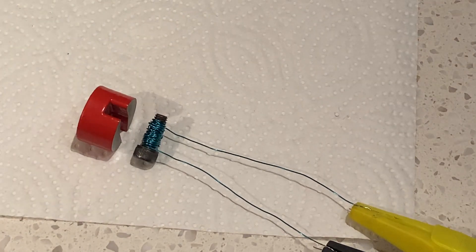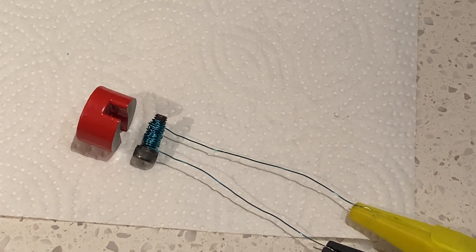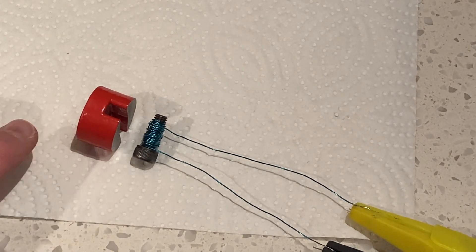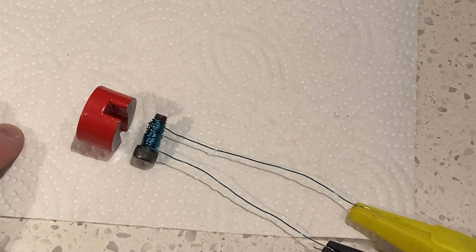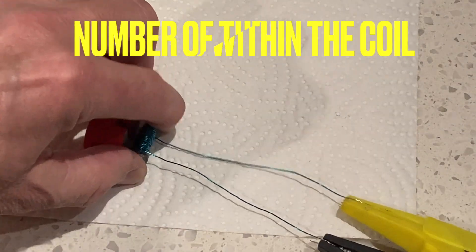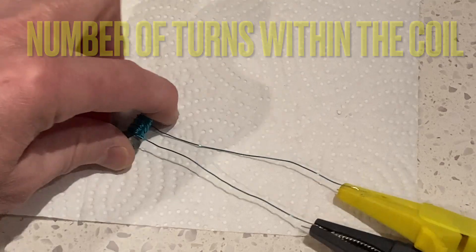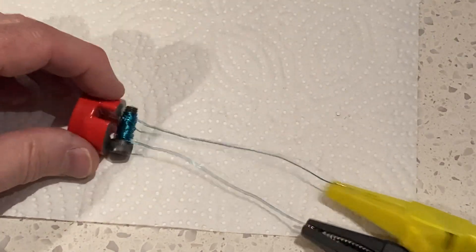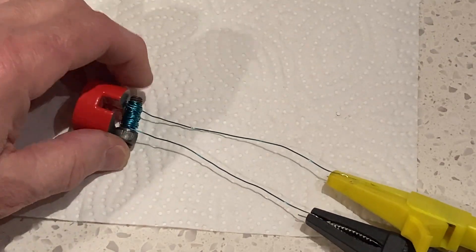A couple of things will affect how much voltage you can induce: the strength of the magnetic field, the number of coils, and how fast I sweep past. Let me show you slow movement and then I'll speed it up a bit.